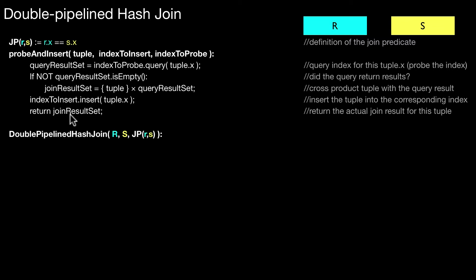The actual join method double pipeline hash join looks as follows. Again both inputs R and S, then the join predicate. First we create those two empty hash tables, one for each input.